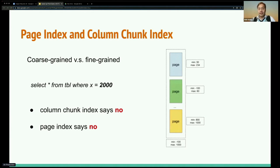Statistics, also called index, has page level index and column chunk level index. Coarse-grained versus fine-grained. Here's an example. You have one column chunk with three pages. Each page has its own range with min-max. I have a filter where X equals 2000. Now the coarse-grained index, which is column level, will say no because it's not falling into its range. Page index also says no because it's not falling into its range also.